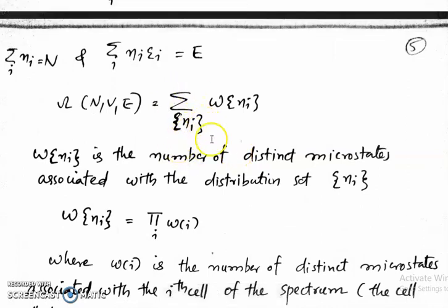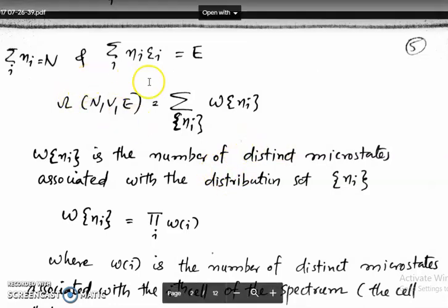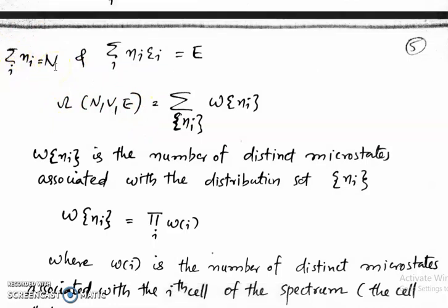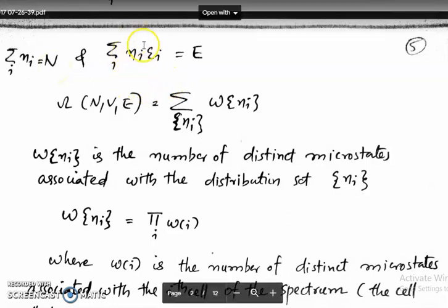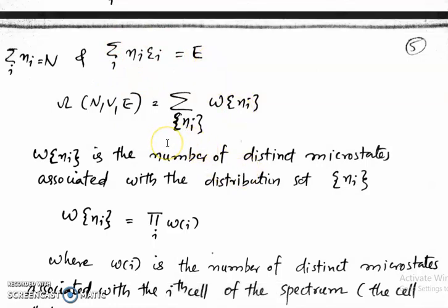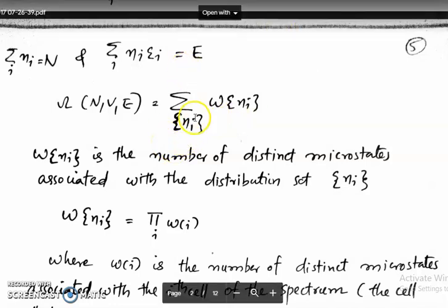We can have different distribution sets satisfying the conditions: sigma_i Ni equal to N (the total number of particles in the system), and sigma_i Ni epsilon_i equal to E (the total energy of the system). The number of such distribution sets can vary, and we sum W(Ni) over all these states.